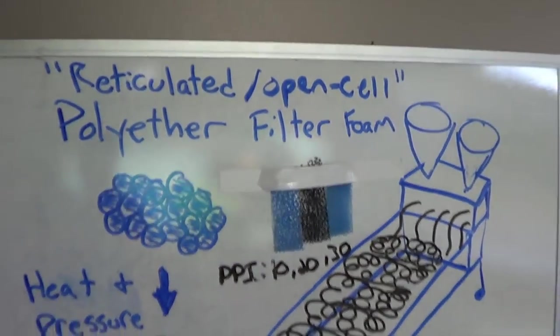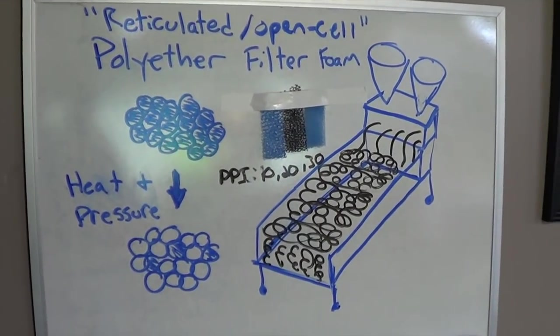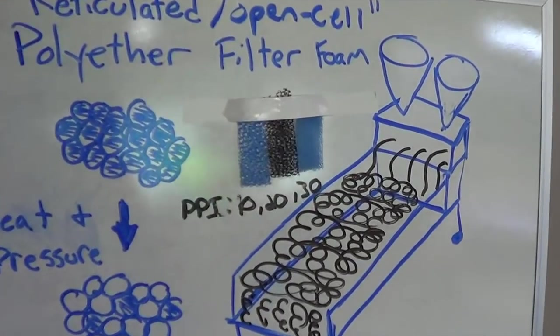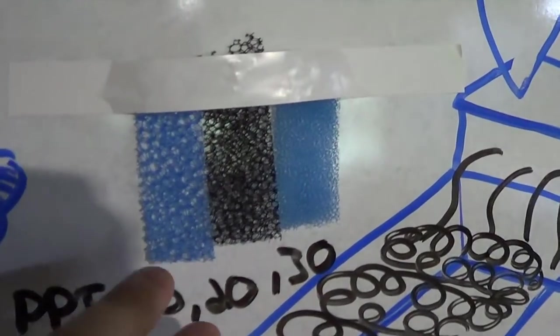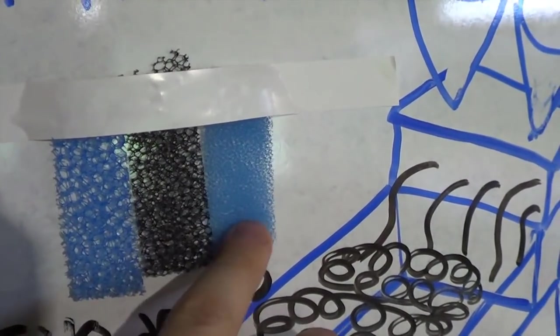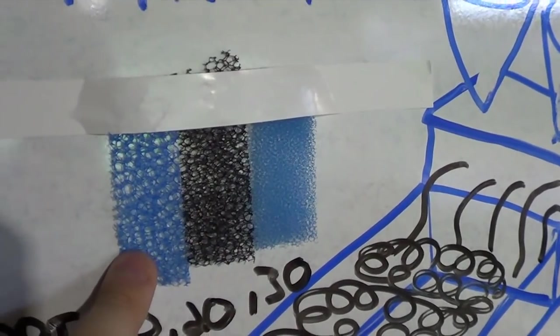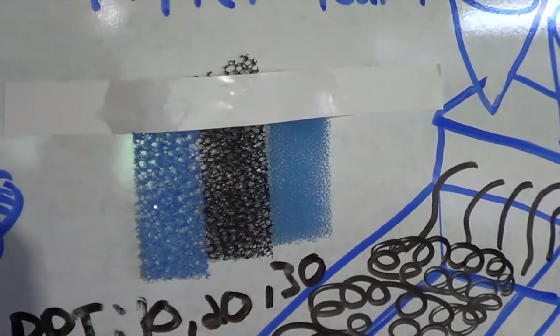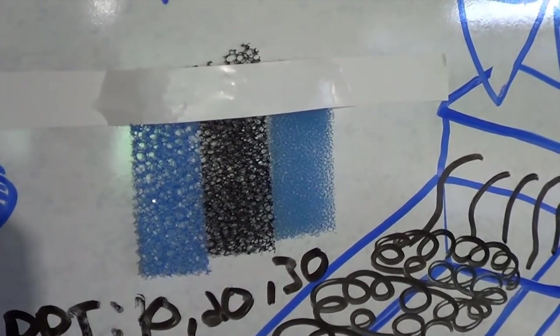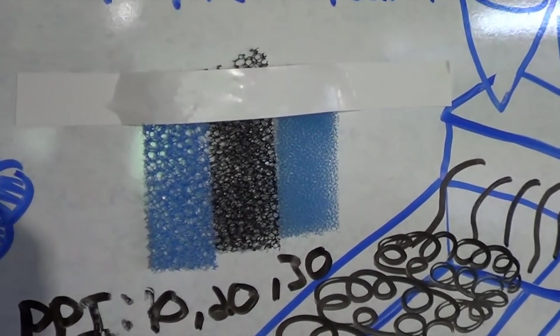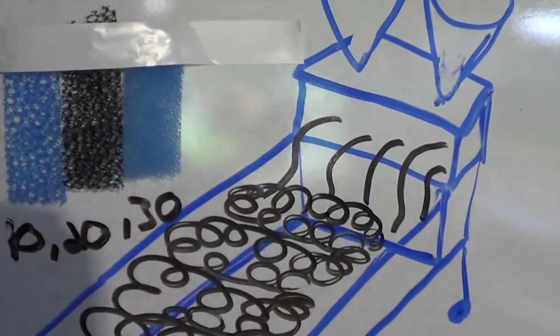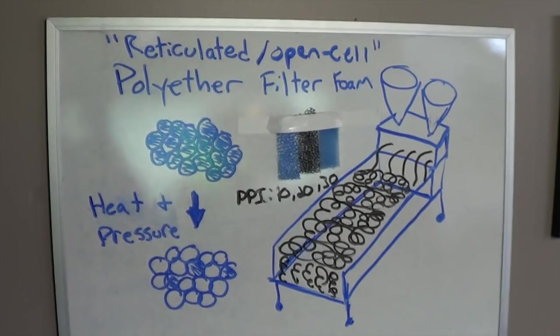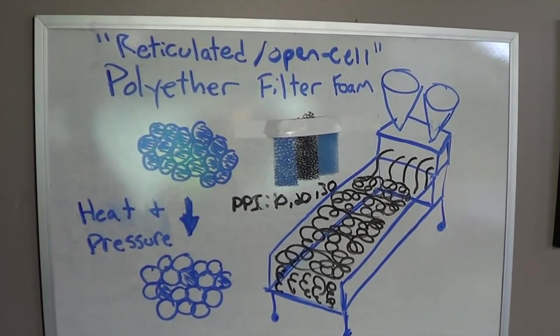So that's kind of a look at the foam making process, where your foam comes from. I got these pieces of foam here from Swiss Tropicals. You can also pick some up at Angels Plus. Those are two very good online retailers for open cell or reticulated polyether filter foam. So go check those guys out. Hope you learned a little something, and I'll see you guys later.